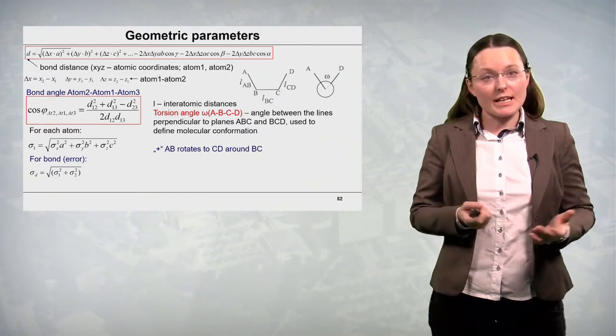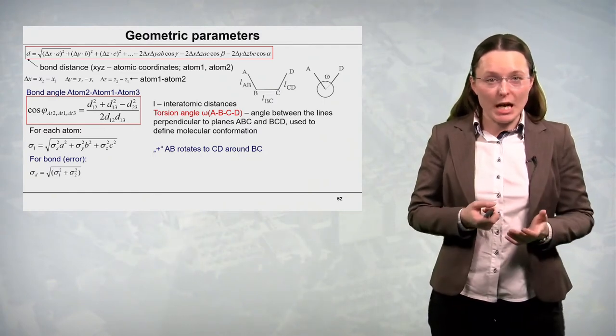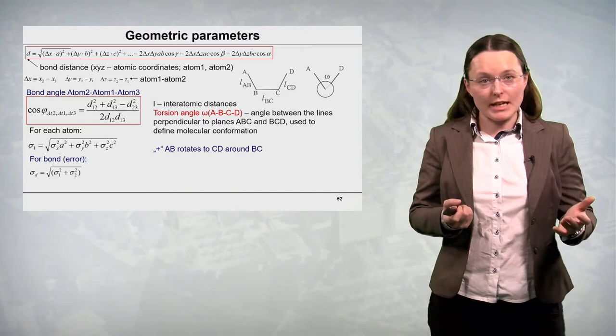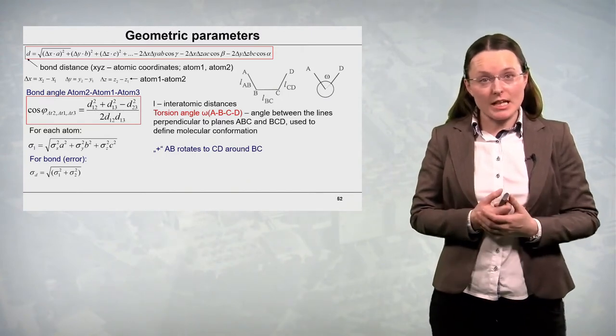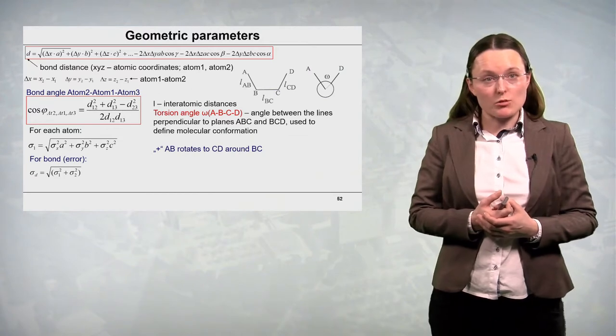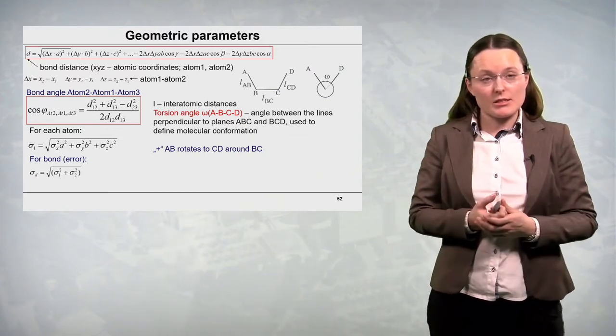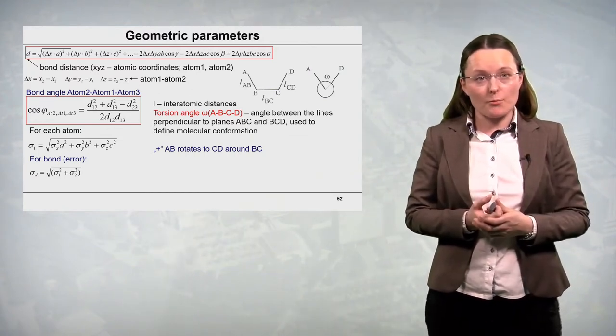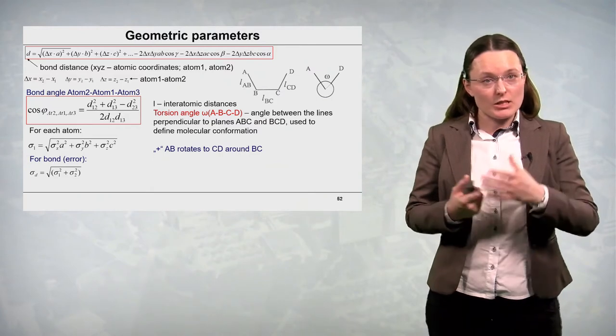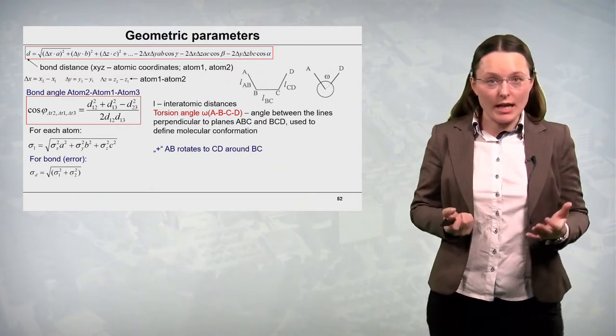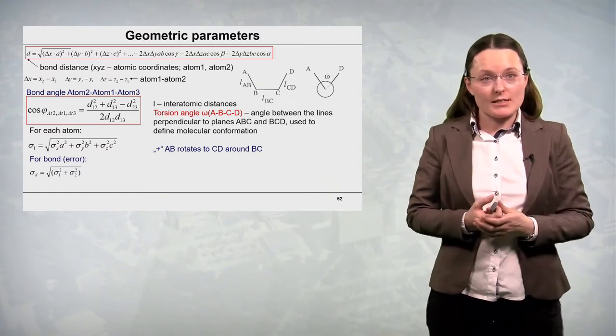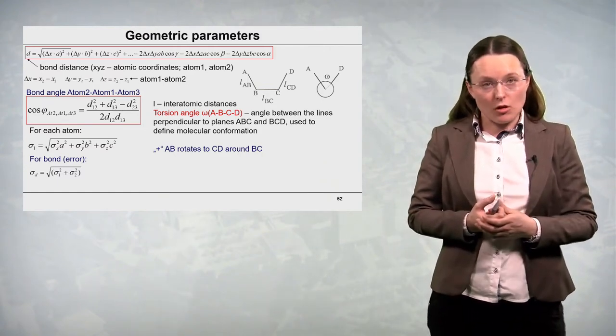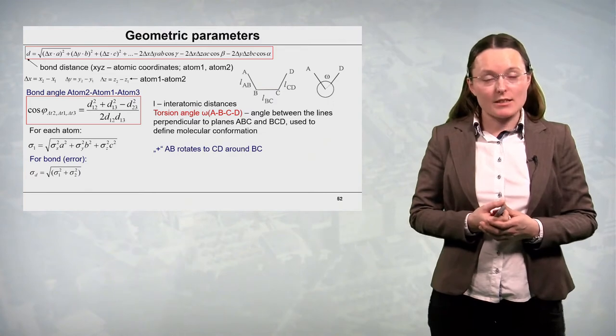It is important to realize how the geometric parameters of molecules are actually calculated. So on this slide I quote some formulae which are used. So the first one is for calculation of bond distance. So there is a bond distance between atom 1 and atom 2 and each of them has certain atomic coordinates x, y, z.